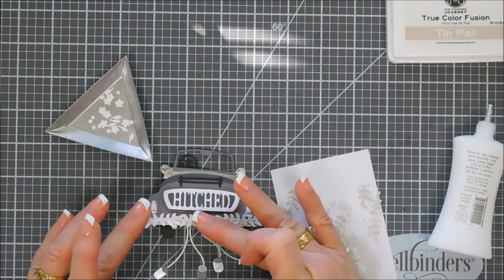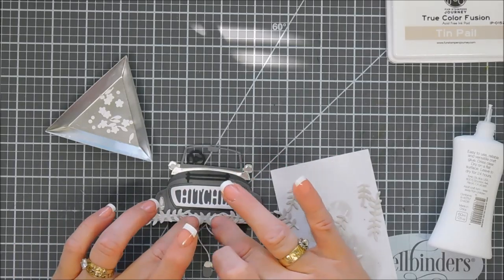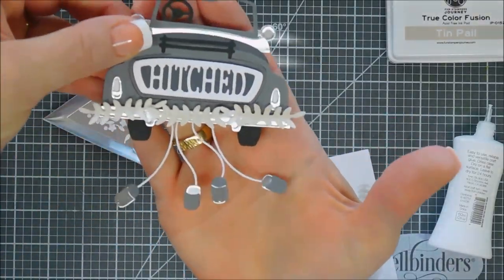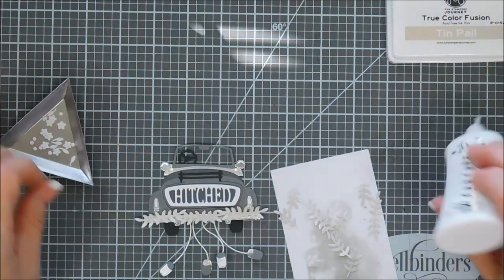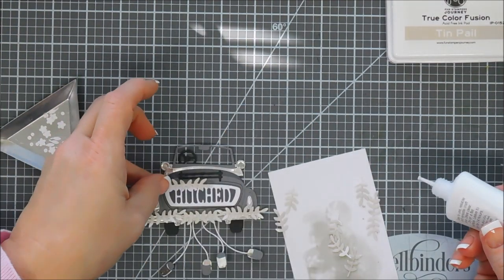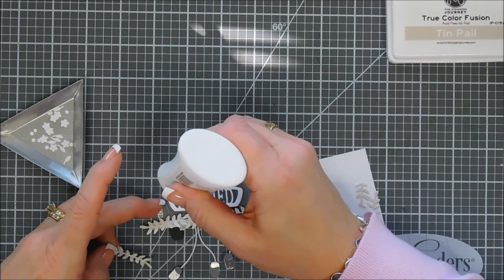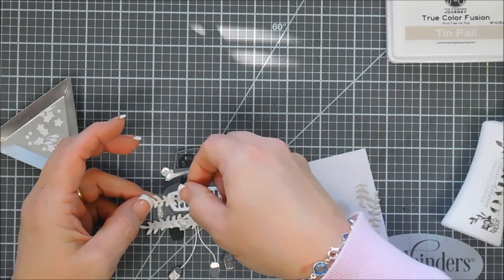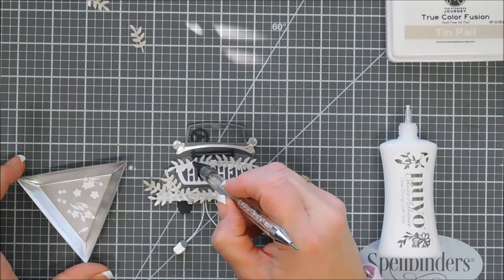So I thought we'd bring in some Tin Pale ink, it's very light gray ink, and I'm doing a little bit of shading on that foliage. I added three of kind of the swags on the very bottom of the bumper and then we're going to add two above the Hitched. Just adding a line of glue and then we'll go ahead and add our flowers.